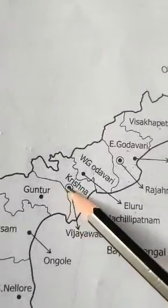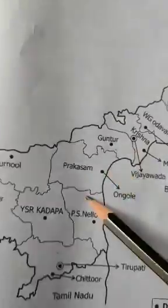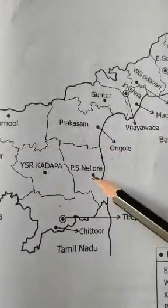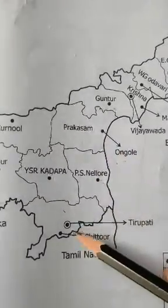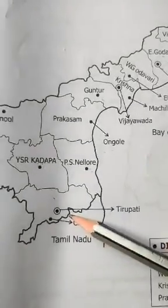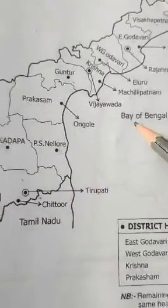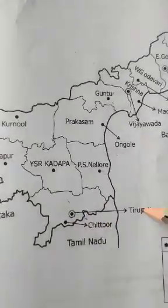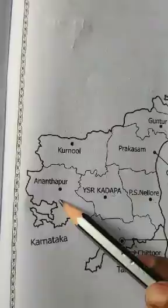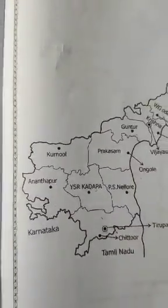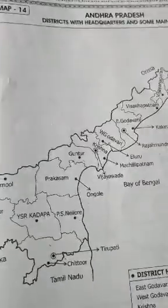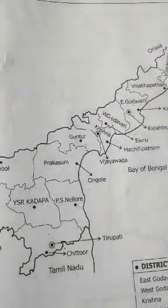And our Vijayawada is here, in Krishna district. Guntur — Guntur. Prakasam — Ongole. Nellore. Chittoor — Tirupati is the pilgrimage centre here. Kadapa — YSR Kadapa. Anantapur — Anantapur. Kurnool — Kurnool. These are the districts and headquarters. I hope you understood, children. Thank you. Have a nice day.